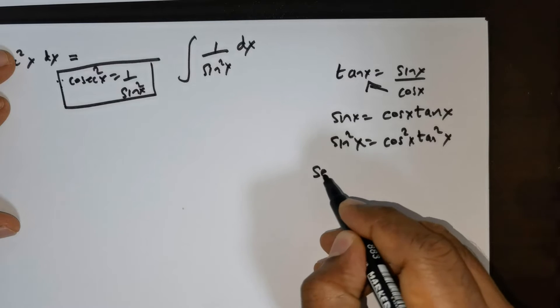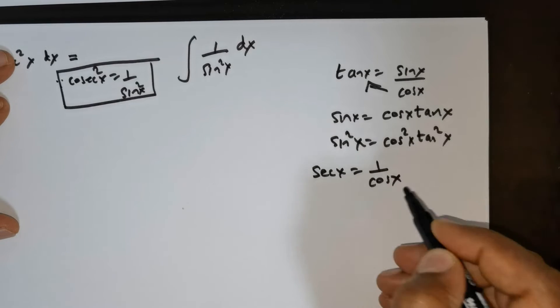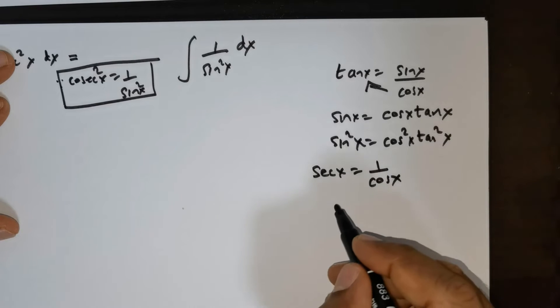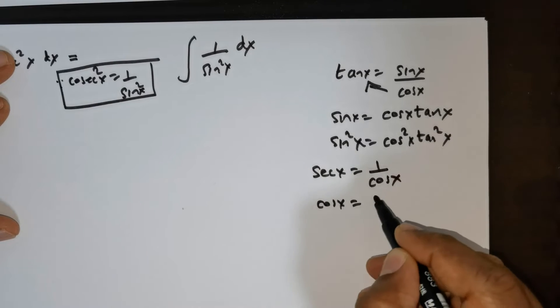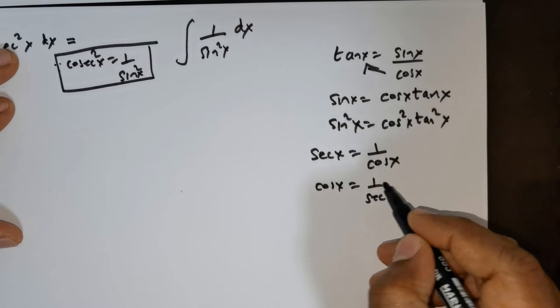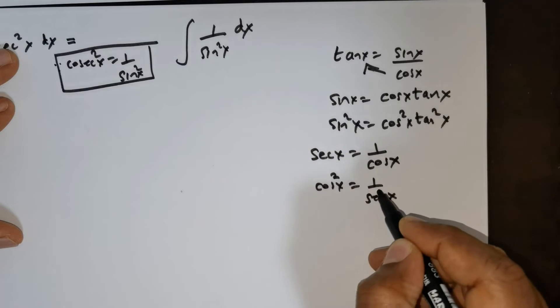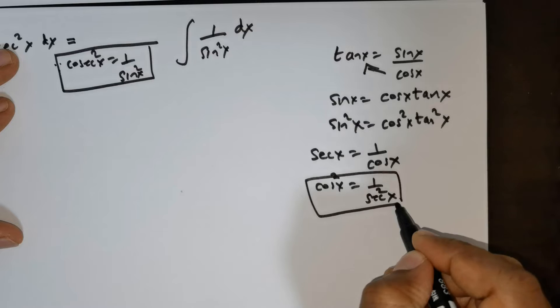Secant x is equal to 1 over cos x, and cos x is equal to 1 over secant x. This means cos squared x is equal to 1 over secant squared x, so I'm going to utilize this.